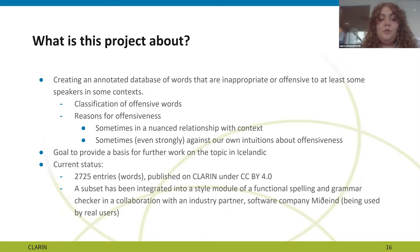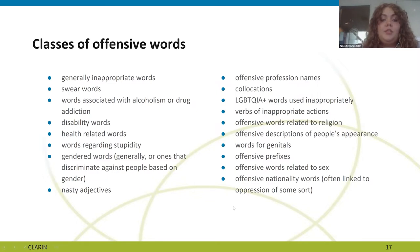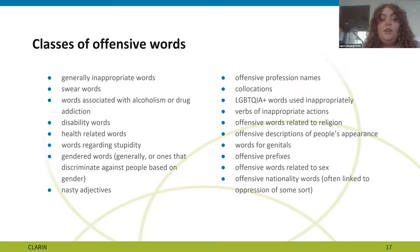The scale of inappropriateness is subjective and can differ for different people; however, we believe the database can serve as a basis to facilitate further development of such data. Each word was classified and marked depending on the reason it can trigger a negative reaction in some contexts, along with other information. The result is a database of 2,725 entries published on CLARIN.